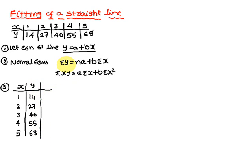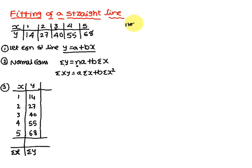Here you come across sigma y. How will you get sigma y? If you add the entire y column values, you are going to get sigma y. The x column summation gives sigma x. n for this problem is equal to 5.